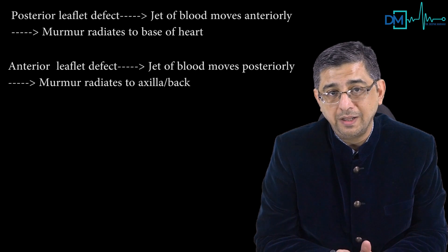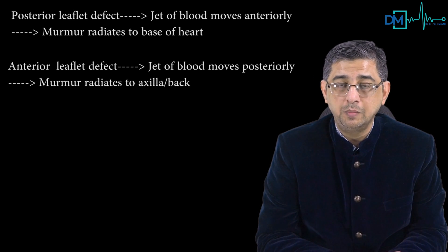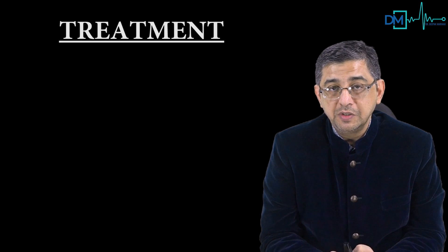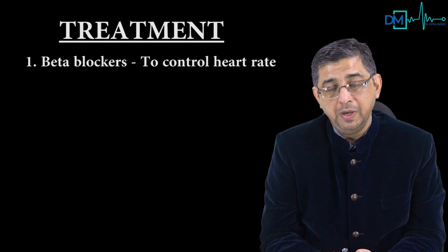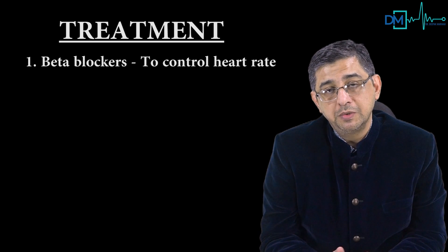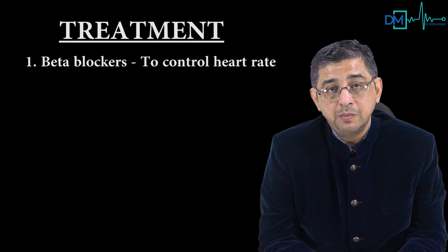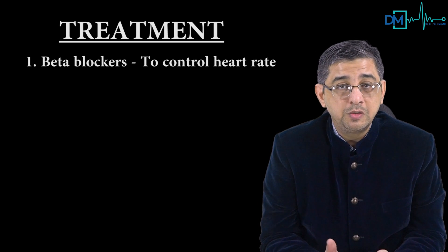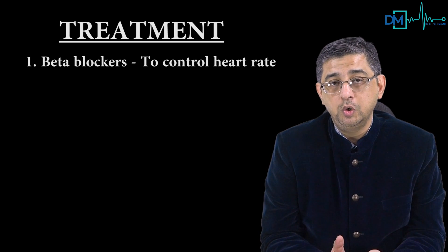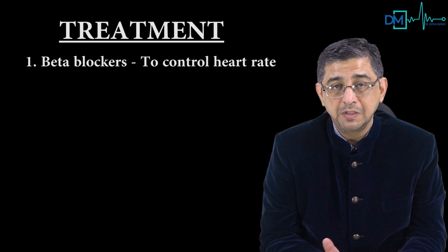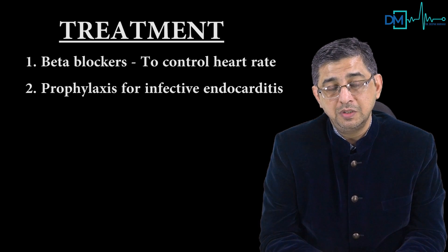For treatment: first, give beta blockers to control heart rate, reduce palpitations, and decrease myocardial oxygen consumption, which helps control substernal chest pain caused by undue stretching of the papillary muscles. Prophylaxis for infective endocarditis is mandatory, since these patients are at risk of developing mitral regurgitation.